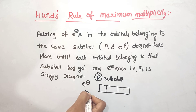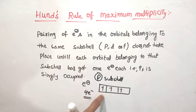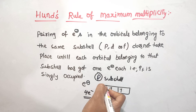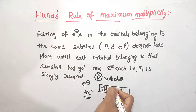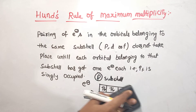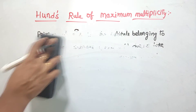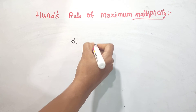We fill electrons into the P orbitals. First we fill single electrons one at a time. For 4 electrons: 1, 2, 3 go in singly first, then the 4th pairs up. For 5 electrons: 1, 2, 3, 4, 5 fill singly across orbitals. For 6 electrons: 1, 2, 3, 4, 5 fill singly first, then the 6th electron pairs up in the first orbital.